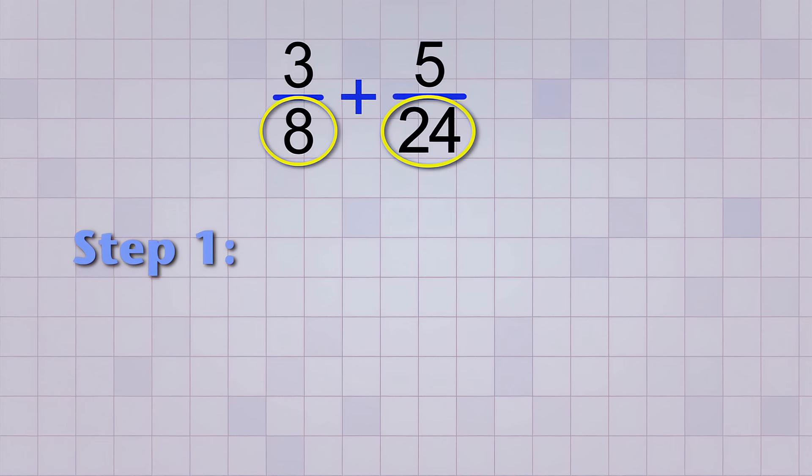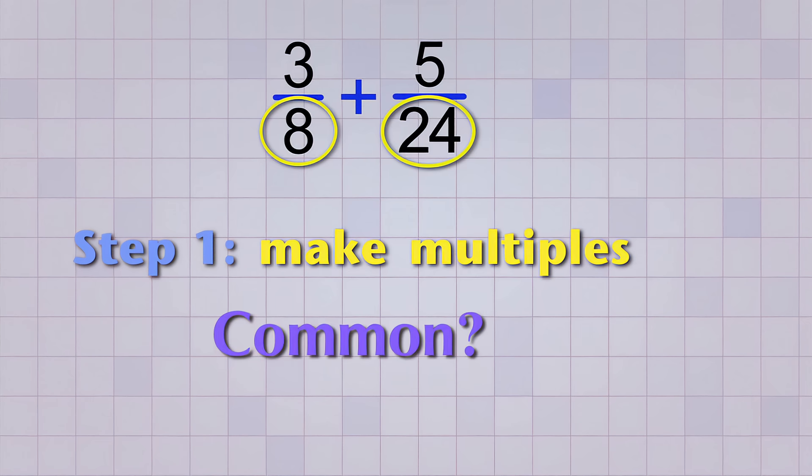Step 1 is to take our two bottom numbers and make multiples of them to see if we can find a common multiple.